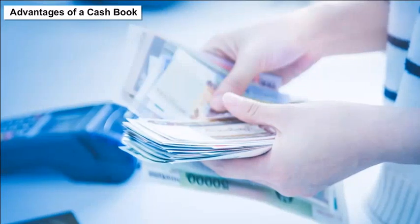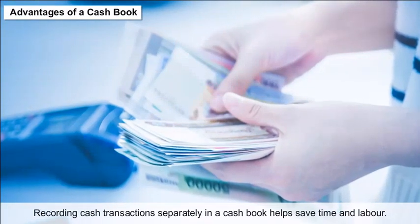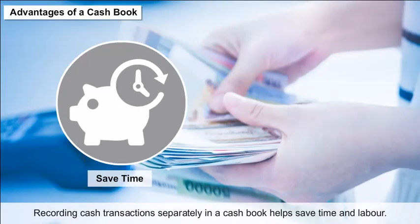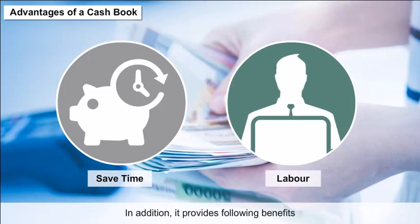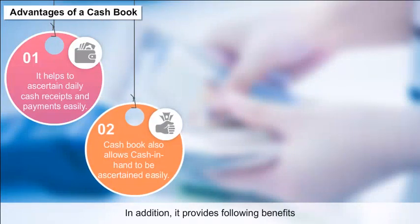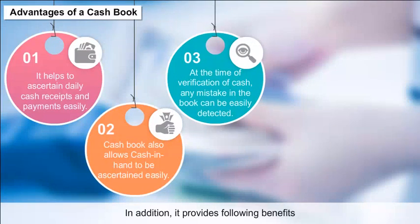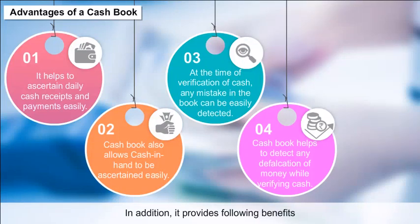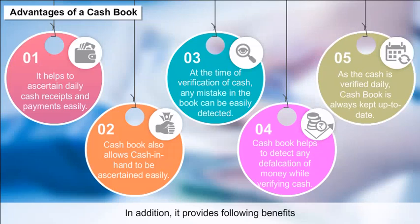Advantages of a Cash Book: Recording cash transactions separately in a cash book helps save time and labor. It helps to ascertain daily cash receipts and payments easily. Cash book also allows cash in hand to be ascertained easily. At the time of verification of cash, any mistake in the book can be easily detected. Cash book helps to detect any defalcation of money while verifying cash. As the cash is verified daily, the cash book is always kept up to date.